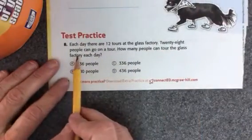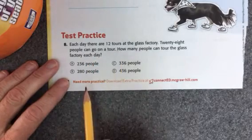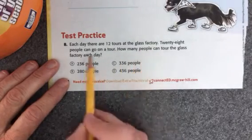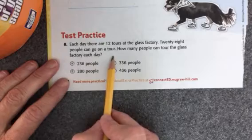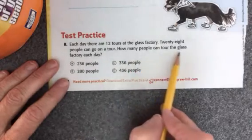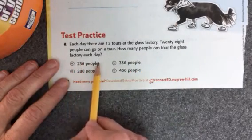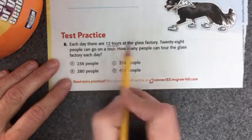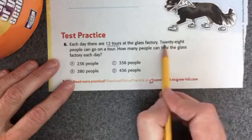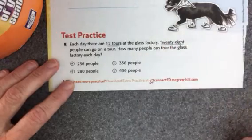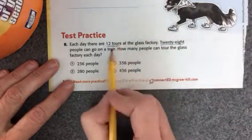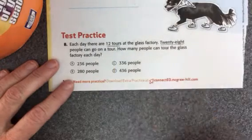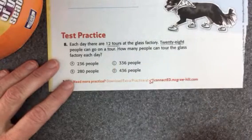Number 8. Each day there are 12 tours at the glass factory. 28 people can go on a tour. How many people can tour the glass factory each day? So it looks like there's 12 tours, and 28 people can go on a tour. So if I multiply 12 times 28, I'll know how many people can go in one day.